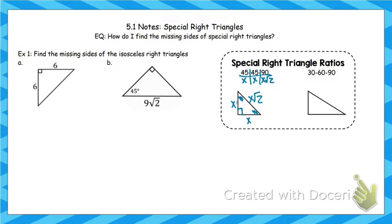Then for 30-60-90: if you had a triangle where one angle was 30, another was 60, and the third was 90, it had a ratio as well. The ratio for 30-60-90 was x, x√3, and 2x. Across from 30 was x, across from 60 was x√3, and across from 90 was 2x.